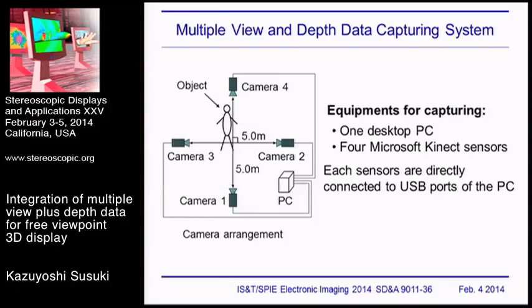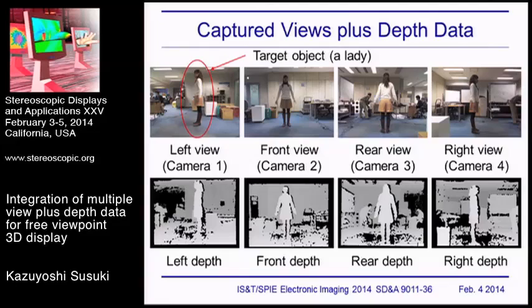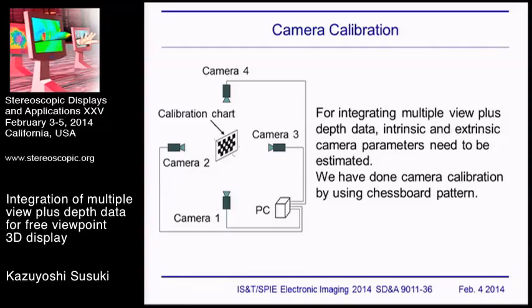This is an example of captured view plus depth data at four viewpoints. The target object is already in the center of the image. These four views are captured by four cameras. The lower images denote depth maps of the left view, front view, rear view, and right view, respectively. For integrating multi-view plus depth data, intrinsic and extrinsic camera parameters need to be estimated.